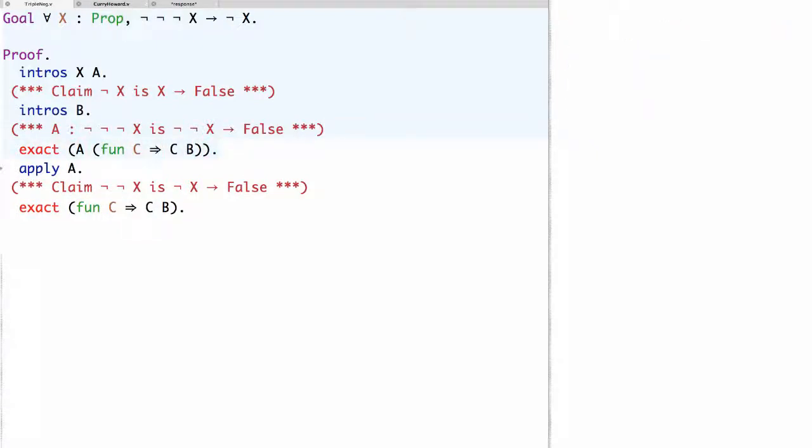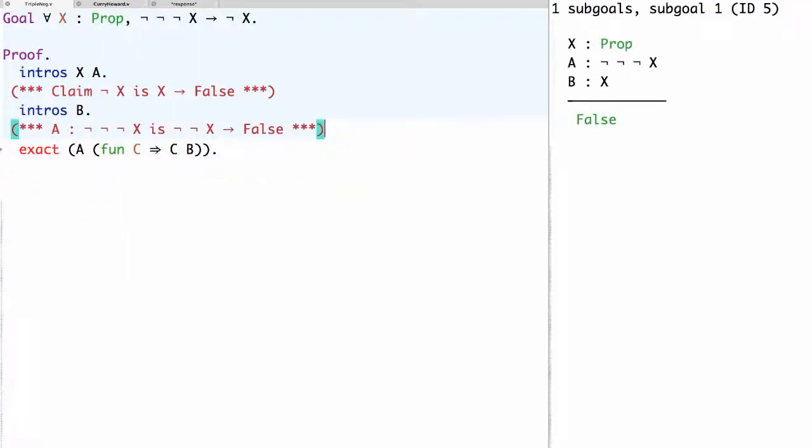Now at this point, we almost have the full proof term. The only tactics that were used before an exact at this point are intros. And we know that intros correspond to lambda abstractions.